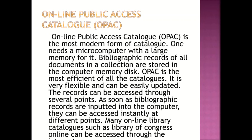The Online Public Access Catalog, known as OPAC, is the most modern form of catalog. One needs a microcomputer with large memory for it. Bibliographic records of all documents in a collection are stored on the computer memory disk. OPAC is the most efficient of all the catalogs — it is very flexible and can be easily updated. Records can be accessed through several points; as soon as bibliographic records are input into the computer, they can be accessed instantly at different points. Many online library catalogs, such as the Library of Congress Online, can be accessed through the internet.